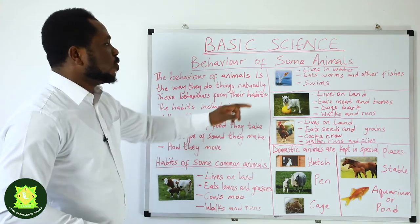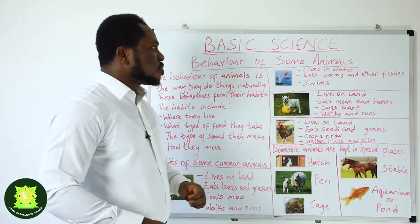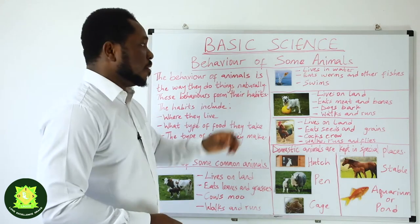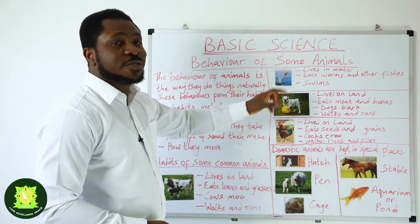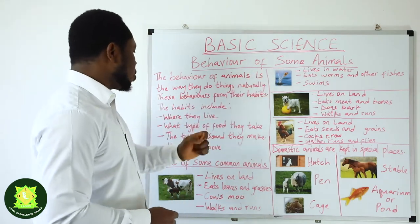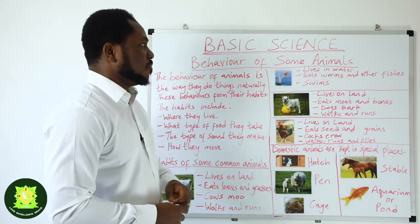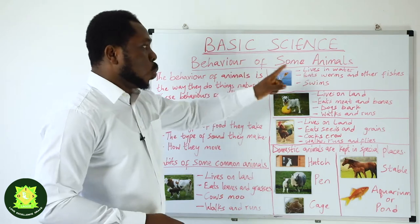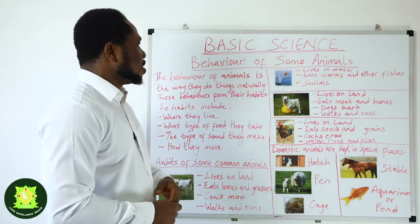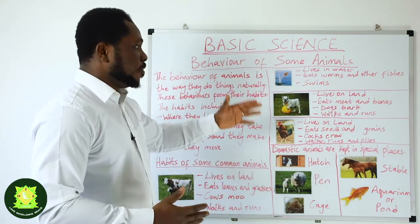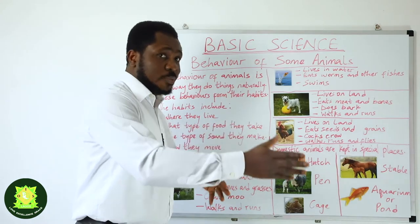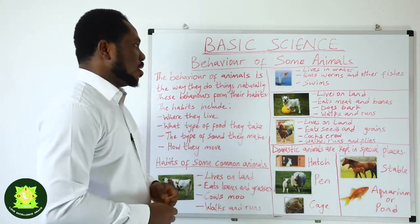Now let us move to fish. Where do fish live? Fish live in water. What do they eat? They eat worms and other fishes. And how do they move? Fish move by swimming in the water.